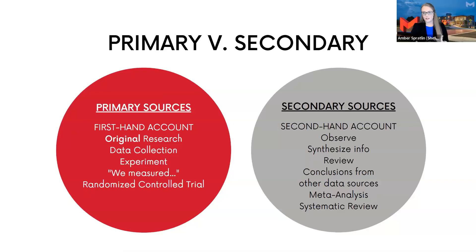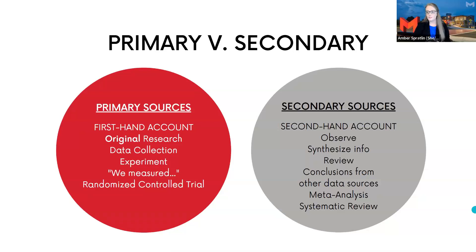Secondary sources, on the other hand, are second-hand accounts. They observe the data collection of other people, synthesizing information from many different studies none of which they conducted themselves. It might be called a review, a meta-analysis, or a systematic review — they draw conclusions from other data sources that are not their own. Those are secondary sources, but that doesn't mean they're not usable. At the bottom of a secondary source you'll find a references list with many primary sources listed — so if you find a great review article, look at their references and go straight to the source as well.